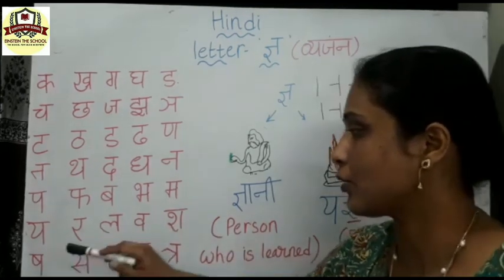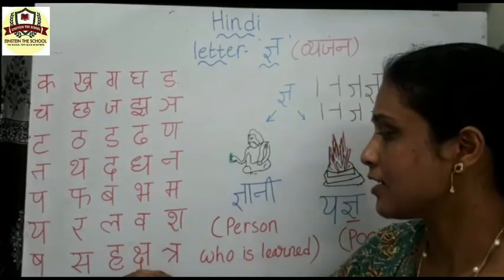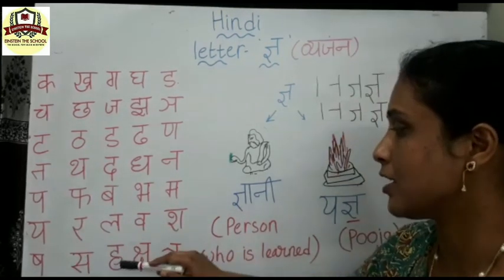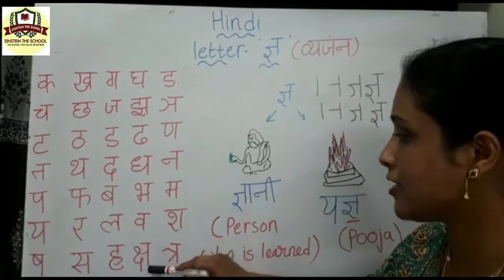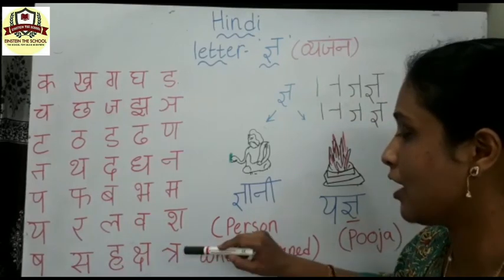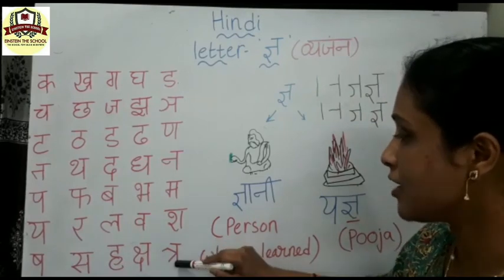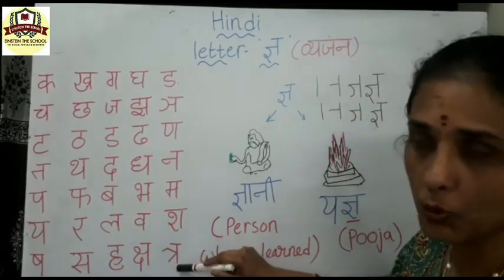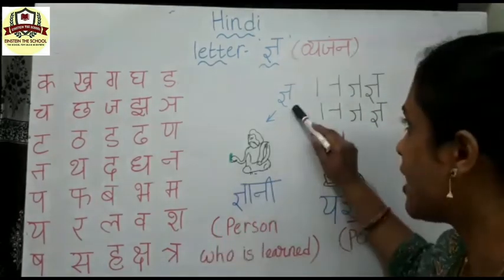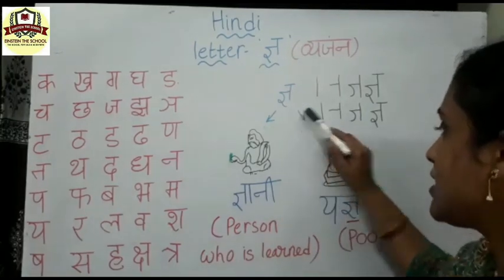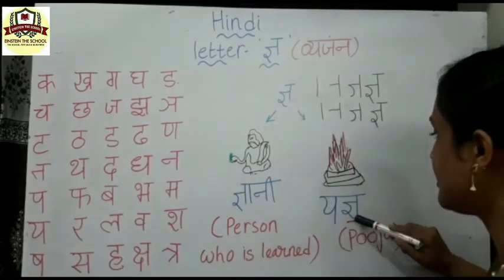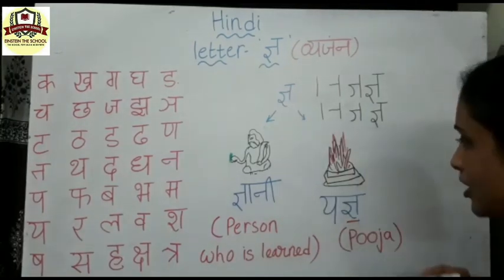Sh say Shalgam, Sh say Shatkon, Sh say Sabzi, Ha say Hati, Sh say Kshatriya, Tra say Trishool, Gna say Gnaani, Gna say Yagna. Understood, children?